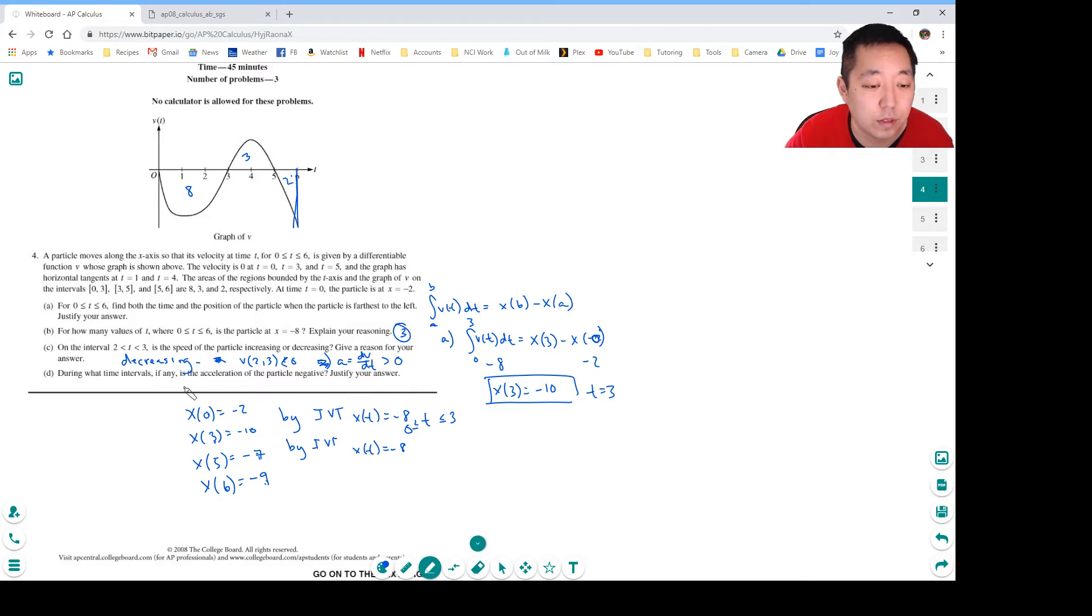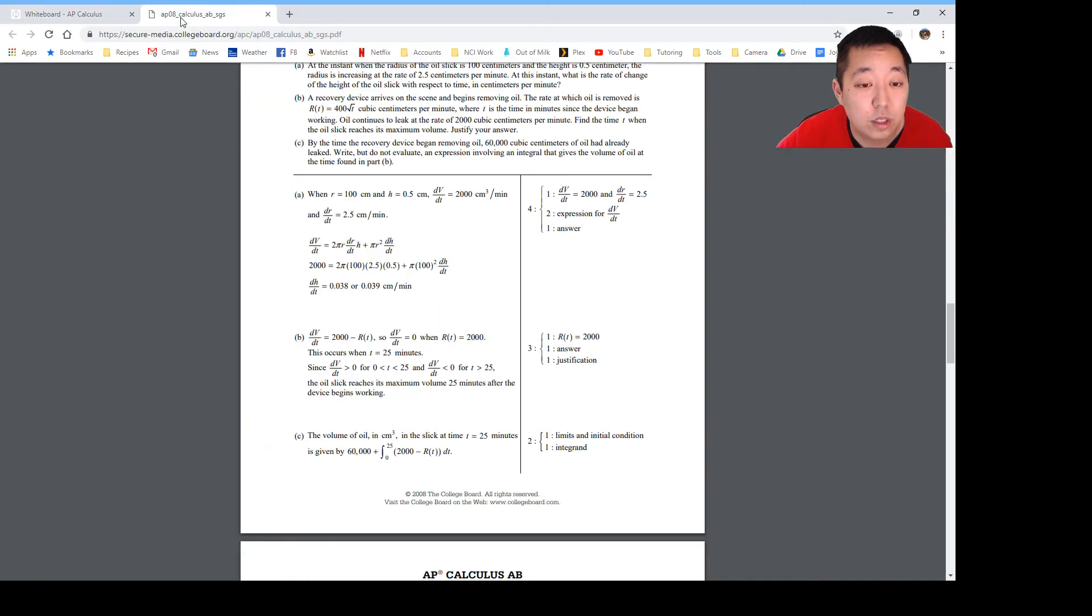Okay, during what time intervals if any is acceleration of the particle negative? Justify your answer. So a equals dv/dt and that's less than 0 when the slopes are negative. So that happens from 4 to 6 and also from 0 to 1, these two times.